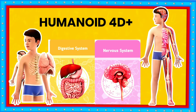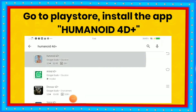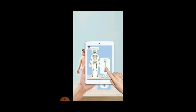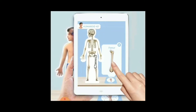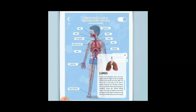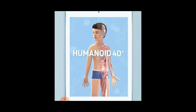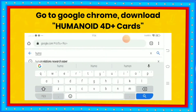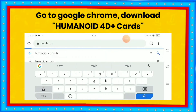Let's go to Humanoid 4D Plus. To download the app, go to Play Store then install the app. Go to Google Chrome and download Humanoid 4D Plus cards.